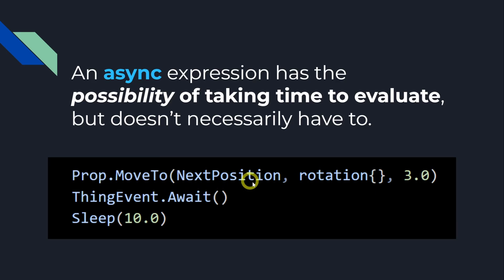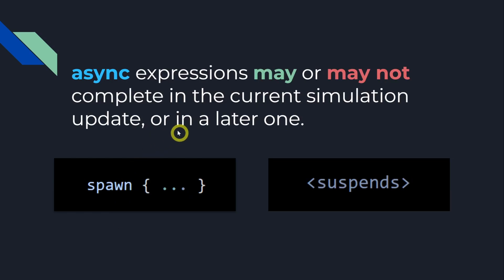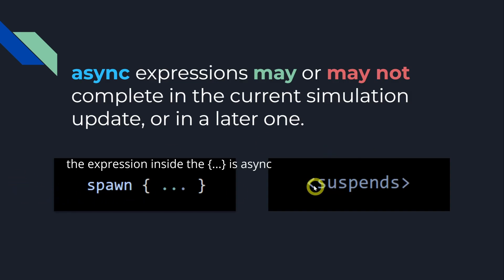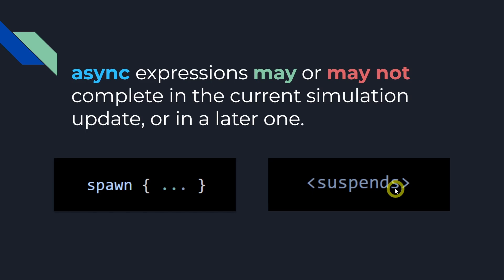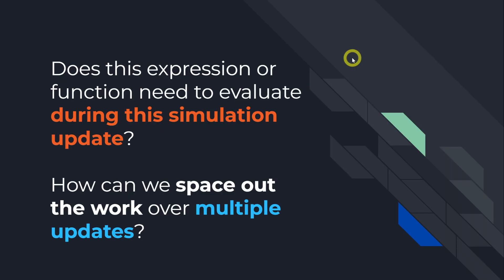Here are some examples of popular async expressions: MoveTo, Await, Sleep. Async expressions may or may not complete in the current simulation update, so if you have to use Spawn — that's an async expression — or it can be within a suspense context. The thing we're going to be talking about is spacing out work over several simulation updates.